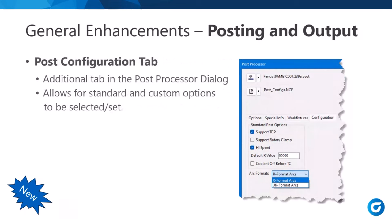Next is the Post Configuration tab — this is new. It's an additional tab in the post processor dialog, and it does depend on the post having this set up. Things you could do with it include toggling TCP support on and off, rotary clamping, or anything you want to control each time you post. You could also make pull-down choices — for example, ARC formats: R format or IJK. This is customizable, but does require a post change, so you'd need to contact the post department or your reseller.